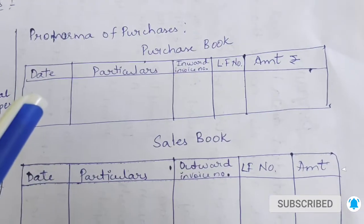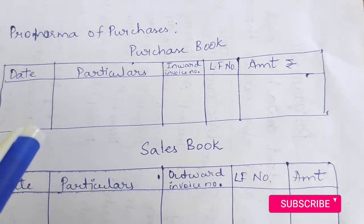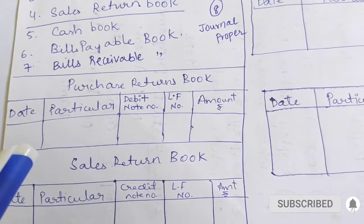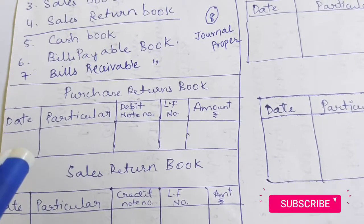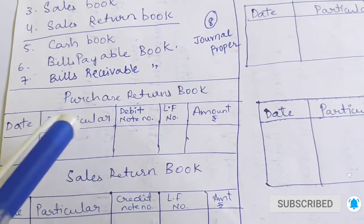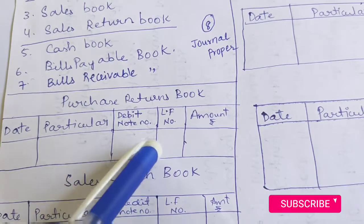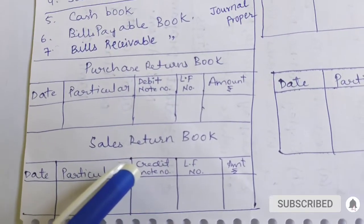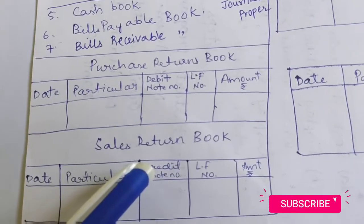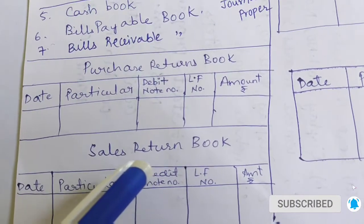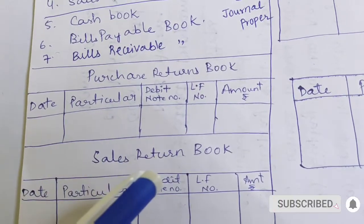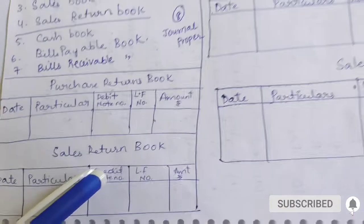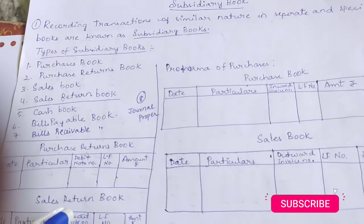Take a look at the format. Next, purchase returns books and sales returns books also have five columns each. The only difference is: in purchase returns, there is a debit note number, while in sales returns there is a credit note number. If a serial number given in the problem is a debit note number, record it in purchase returns book; if it is a credit note number, record it in the sales returns book. These are the four simple formats for the four important subsidiary books.